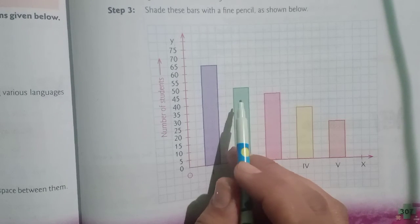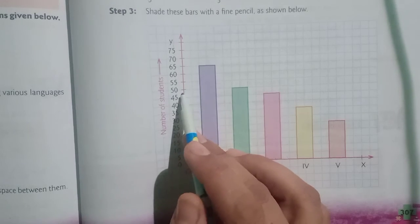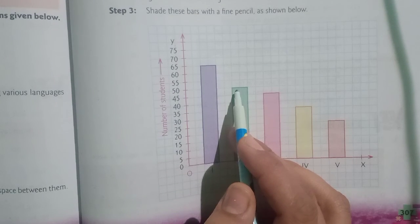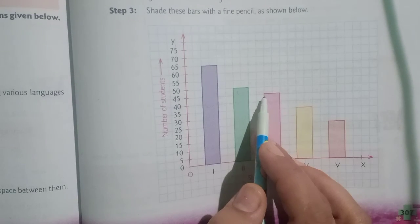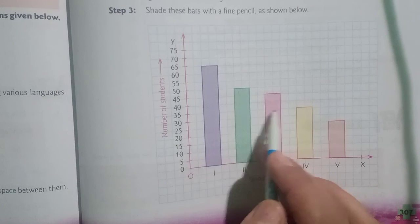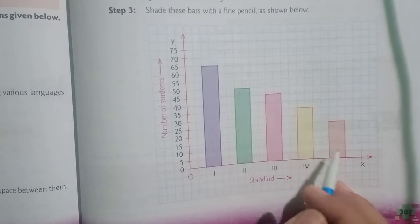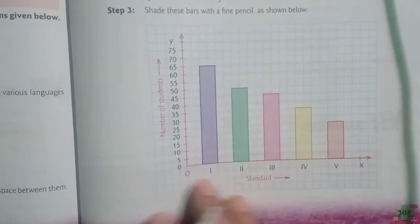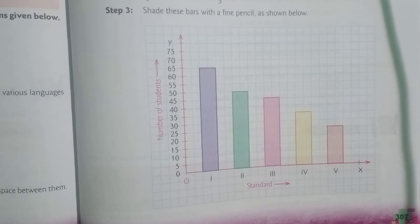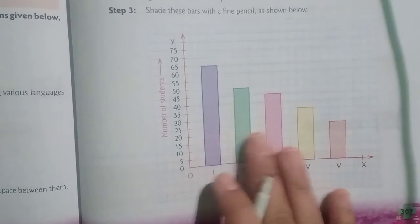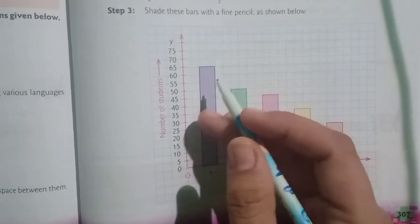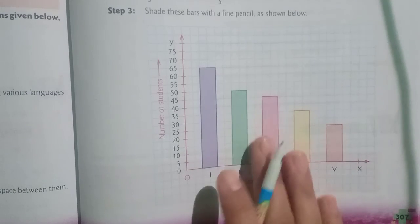Next is second standard with 50 students, so the bar is reaching till 50. Next is 45, then 35, and the last one is 25. Now you can shade these bars with a fine pencil or you can just make slanting lines in them.